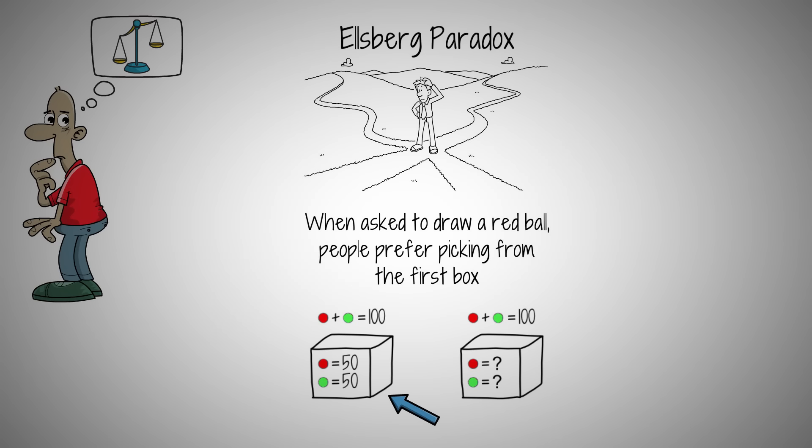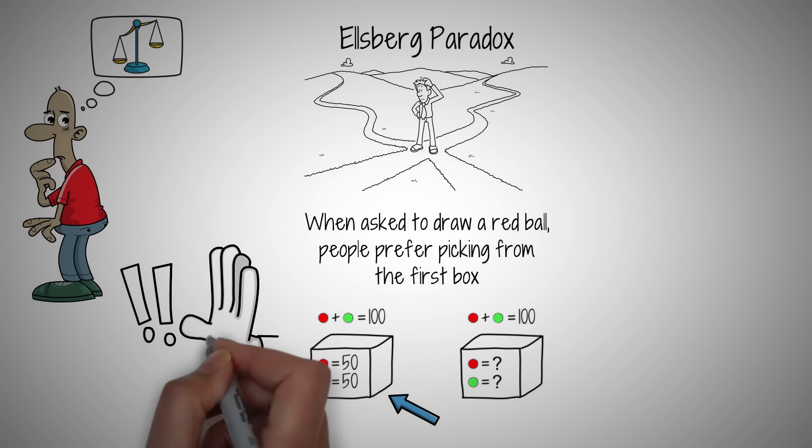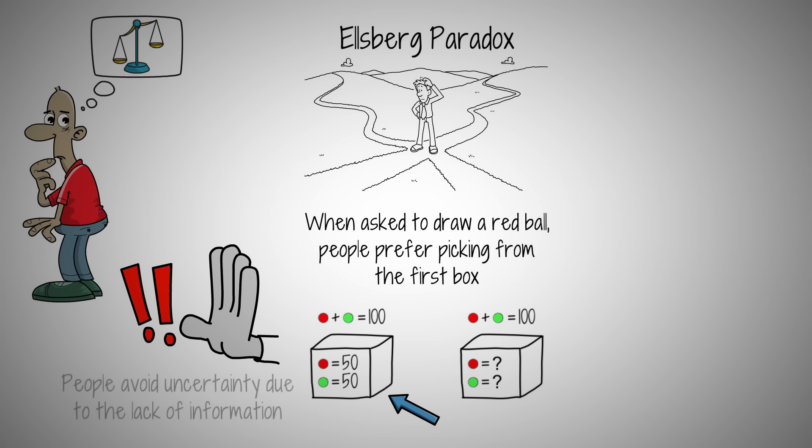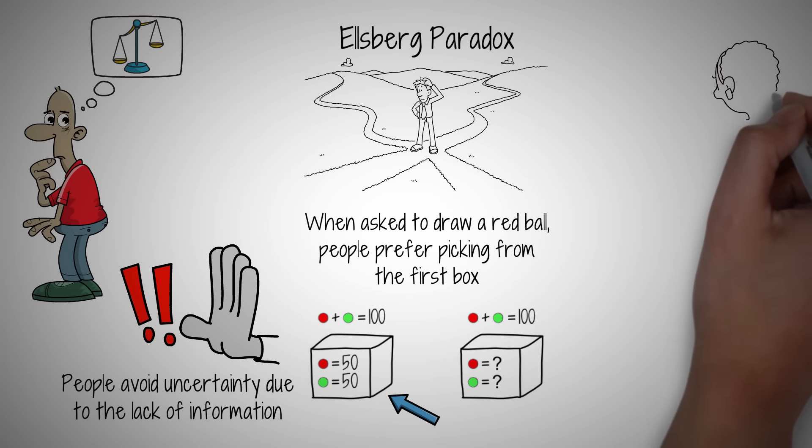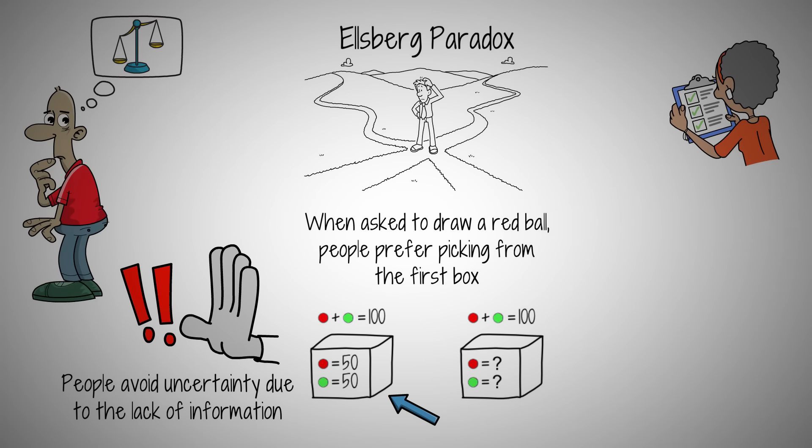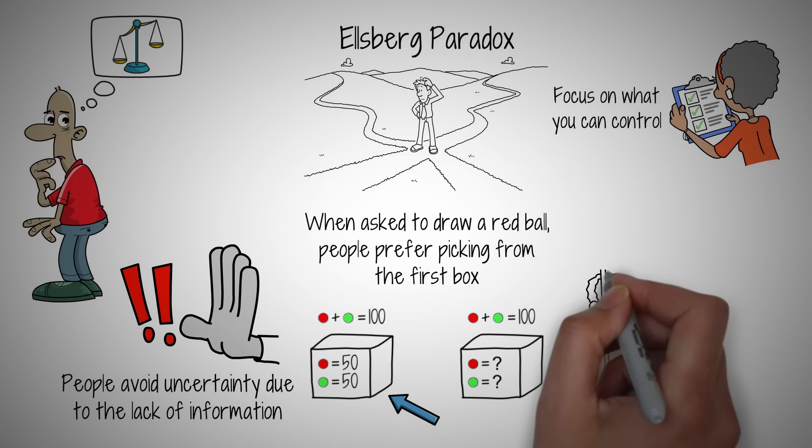The Ellsberg paradox is a phenomenon where individuals avoid uncertainty due to the lack of information, leading to decision-making that isn't always in their best interest. But embracing uncertainty can empower you. By acknowledging the unknowns and focusing on what you can control, you can make more informed and confident decisions.